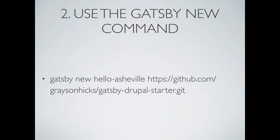Gatsby comes with a 'gatsby new' command — you title your site and point it to a GitHub repo. You can point it to any GitHub repo that anyone makes as a Gatsby starter. So say you want a blog with Markdown using styled components — somebody might have already made that boilerplate. It installs a site with a certain template or configuration already in place. If you don't supply a repo, it just uses the Gatsby default starter.